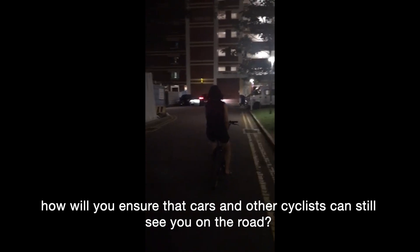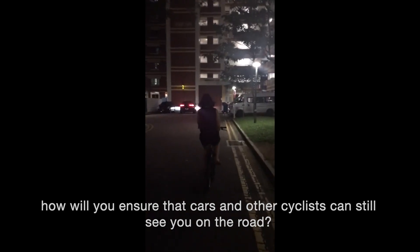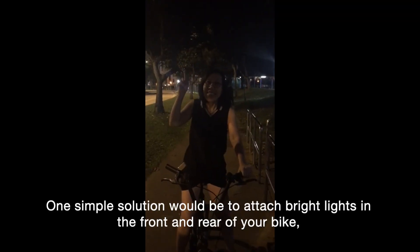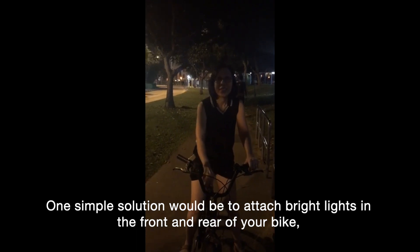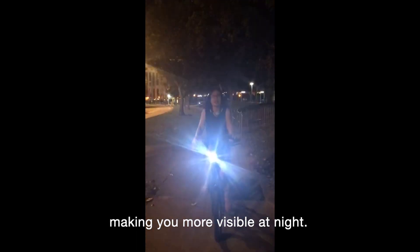Imagine getting on your bike at night with a monotonous attire on. How will you ensure that cars and other cyclists can still see you on the road? One simple solution would be to attach bright lights in the front and rear of your bike, making you more visible at night.